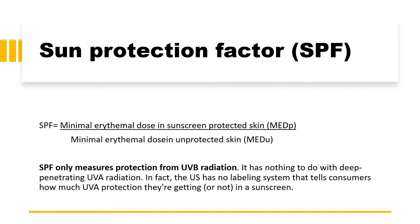When formulating sunscreen, we are primarily concerned with ultraviolet B blocking agents. The sun protection factor formula is: the minimum erythemal dose on protected skin divided by the minimum erythemal dose on unprotected skin. It only measures protection from UVB radiations. It is very important to know that SPF has nothing to do with the deeper-penetrating UVA radiation. In fact, in the US there has been no labeling system that tells consumers how much UVA protection they are getting in a sunscreen.